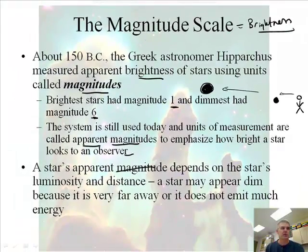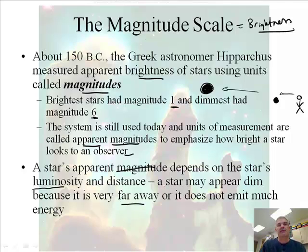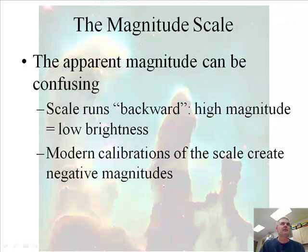So the apparent magnitude depends upon the star's luminosity, how bright it is, and also the distance it is away. So a star may appear dim because it's far, far away, or maybe because it doesn't have much brightness, much energy being emitted. Alright, so this can be confusing.